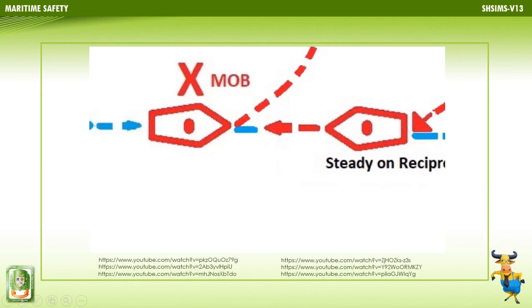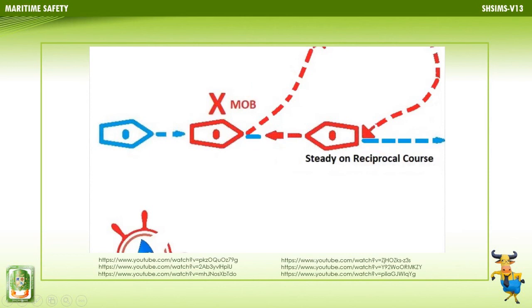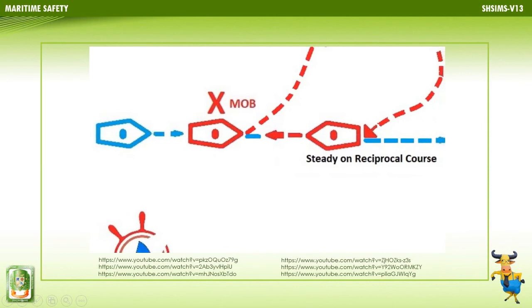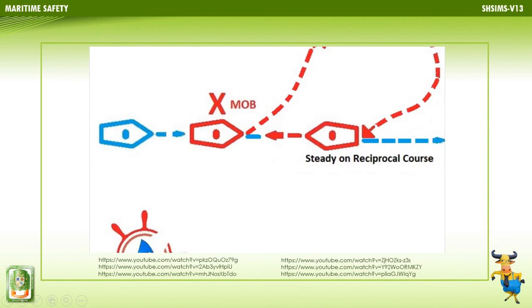To execute a Williamson turn, the same speed is maintained throughout the maneuver until the vessel is on its reciprocal course. The vessel is first turned until the heading is approximately 60 to 70 degrees from the original course. The helm is then reversed with the same amount of helm applied in the opposite direction — for example, one full turn of the wheel to starboard, then back to midships, and one full turn to port, until the vessel is on the reciprocal of the original course.